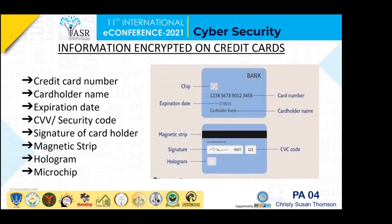The information encrypted on credit cards includes: first, the credit card number, which is a 15 or 16 digit number printed on the front side of the credit card towards the bottom. Next is the cardholder name — the name of the holder of the card, also printed on the front of the credit card towards the bottom.